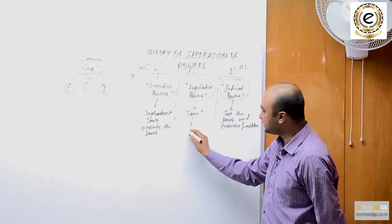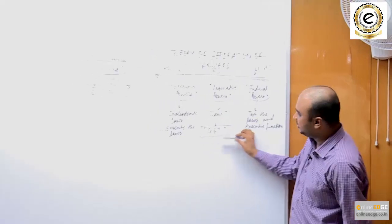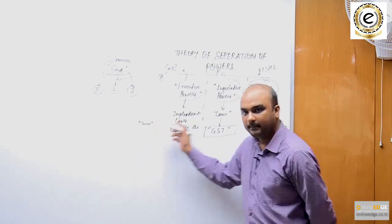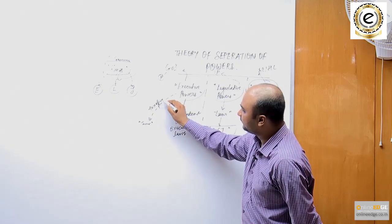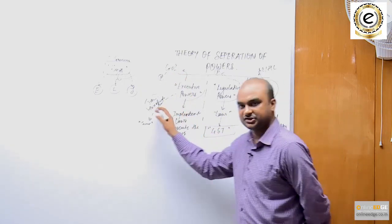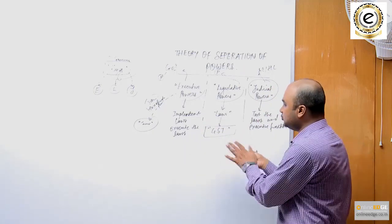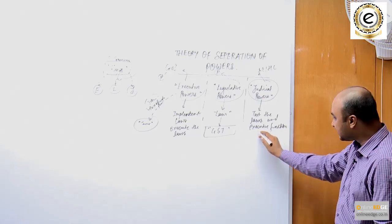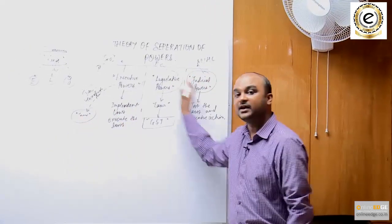The job of the executive is to execute those laws, and all actions taken by the executive must be in conformity with those laws. For example, the GST law is made by the legislature, and taxes are collected by implementing the GST law — the indirect tax officials implement it under the direction of the Ministry of Finance. Taxes cannot be taken without authority of law. If there is no law on GST and someone still tries to take GST from the people, the courts will come in and declare such an executive action as unconstitutional and void because there is no legal backing to that action.